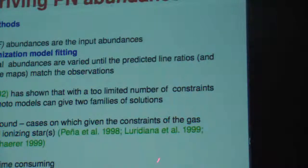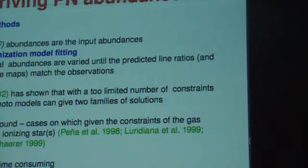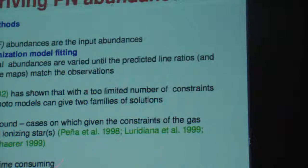Sometimes you are not able to find a good model for a certain number of constraints for the central star and the nebular density distribution. But the main point is that these methods are tremendously time-consuming, so in general we do not use them because you need months and months to get the abundances you need.